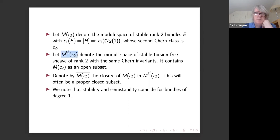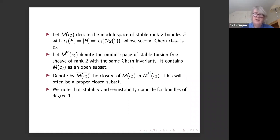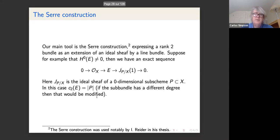The torsion-free moduli space M^{tf}(c2) can have other irreducible components not in the closure of M(c2), which is why the distinction between M(c2)-bar and M^{tf}(c2) matters. We will see examples where these are different. Semi-stability and stability coincide throughout.